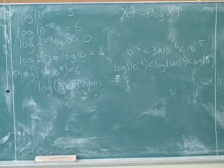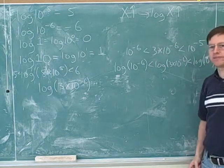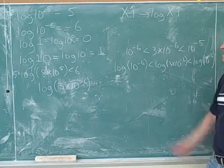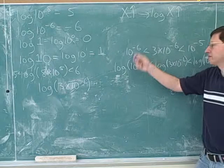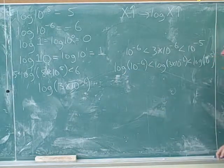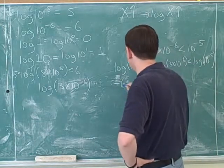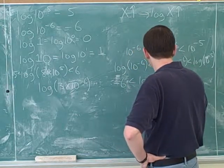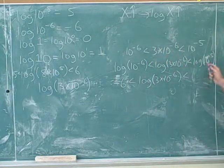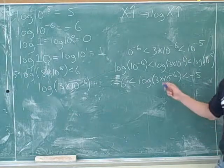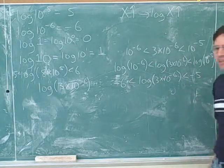Now we take the logarithms of everything. Should I keep the inequalities in the same direction or flip them? Keep them the same. We already saw that x and log of x are directly related. So since this was the smallest number, it should have the smallest logarithm. And now it's pretty easy to take this log. The log of 10 to the negative 6 is negative 6, and this log is negative 5. So we've come up with the answer: the log is between negative 6 and negative 5.